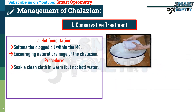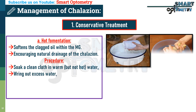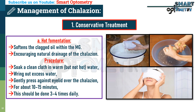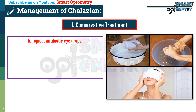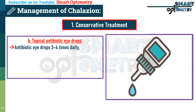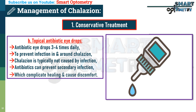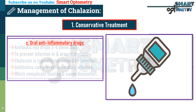To apply hot fomentation, soak a clean cloth in warm but not hot water, wring out excess water, and gently press it against the eyelid over the chalazion for about 10–15 minutes. This should be done three to four times daily. Topical antibiotic eye drops such as ciprofloxacin or moxifloxacin, three to four times daily, are prescribed to prevent bacterial infection in and around the chalazion. Although chalazion is typically not caused by infection, antibiotics can prevent secondary bacterial infection, which can complicate healing.